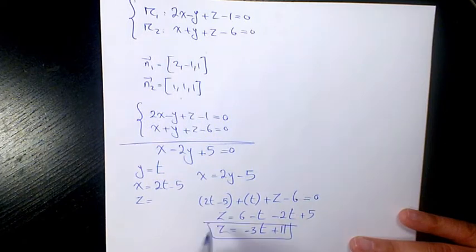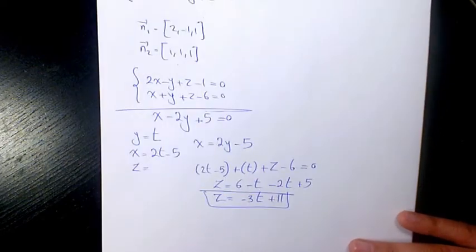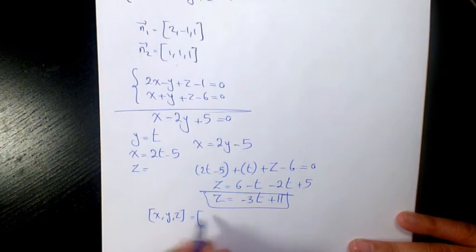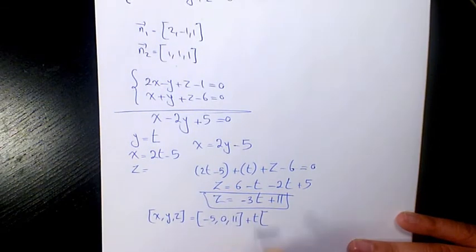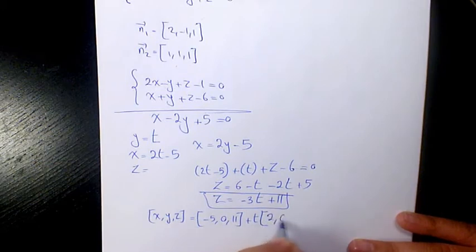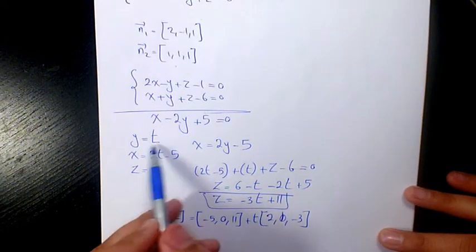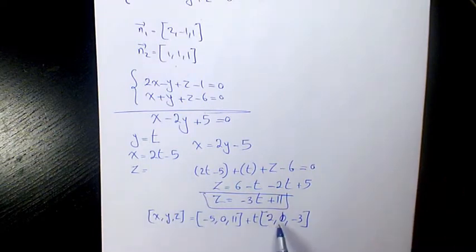So I can write the whole thing as (x, y, z) equals (-5, 0, 11) plus t times (2, 1, -3). This is the equation of the line of intersection.